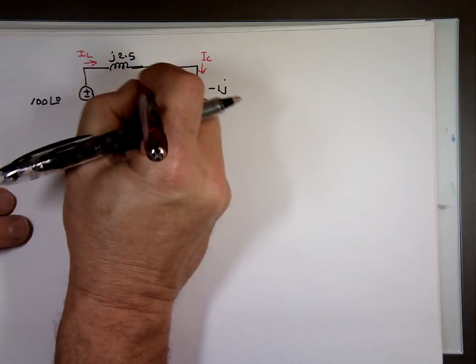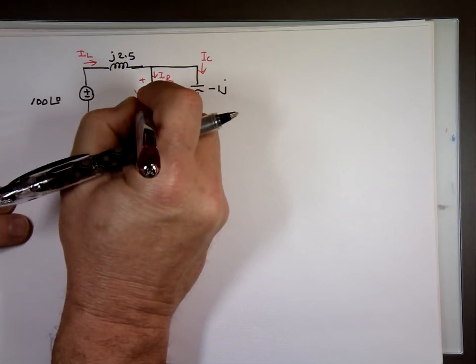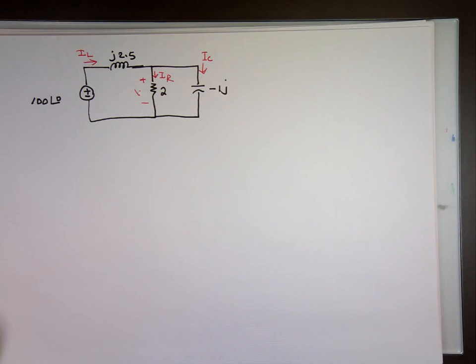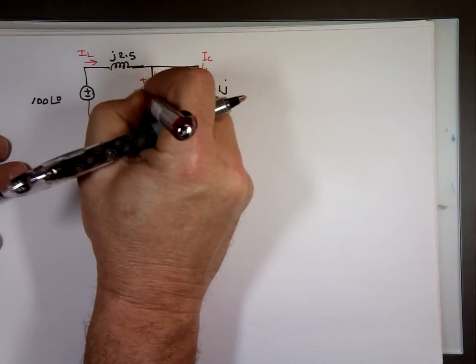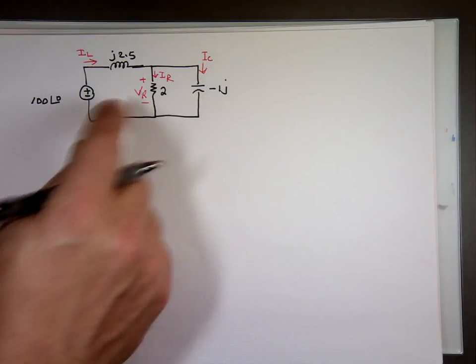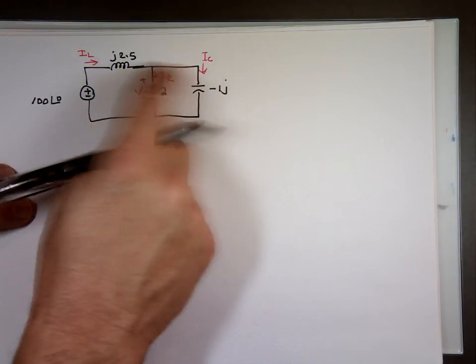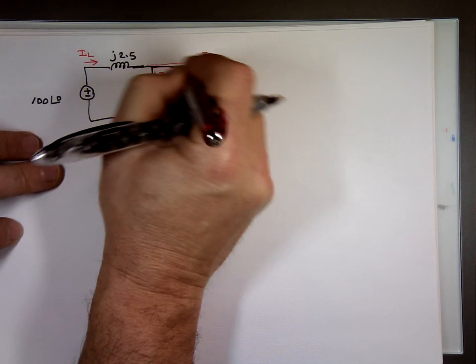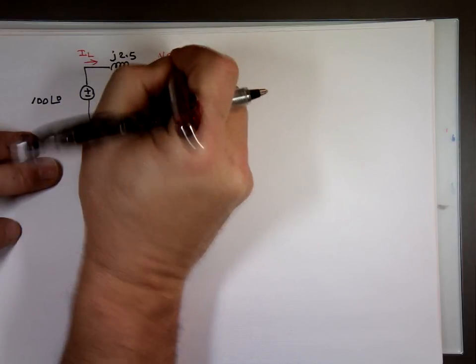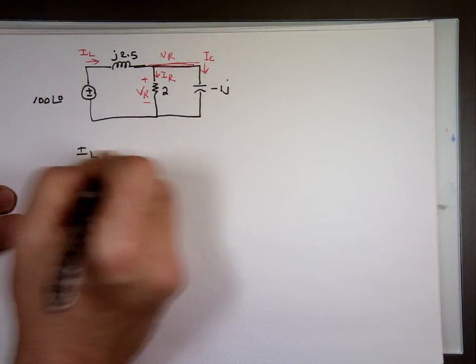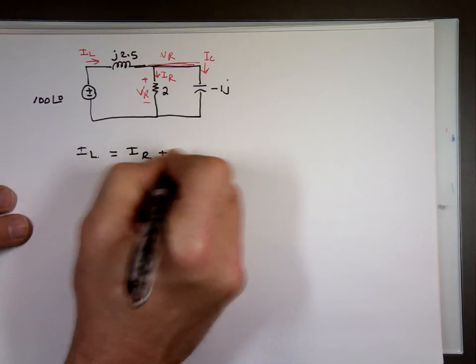If I call this voltage VR, not V3. I'm saying things and writing different things today. I woke up with worse headache. I think my blood is too thin. If this is VR, I can do KCL of that node. This node, I know the voltage to it, so that's the only node. So the node on the top here, it's really VR. So if I do KCL of that node, the current in, which is I sub L equals the current leaving, I sub R plus I sub C.